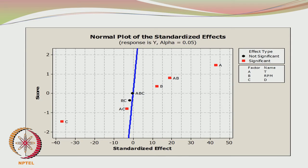In the normal probability plot, ABC and BC lie close to the solid line, whereas C, AC, B, AB, and A lie quite further apart. This means the effects corresponding to C, AC, B, AB, and A are significant, while BC and ABC are insignificant.